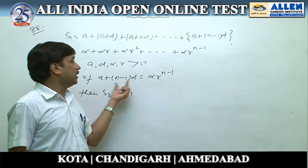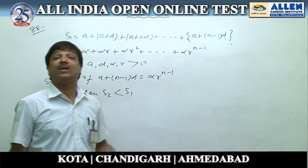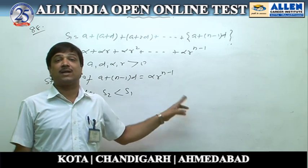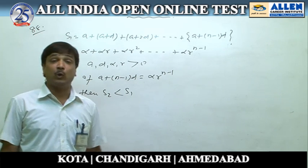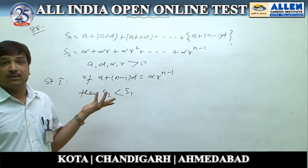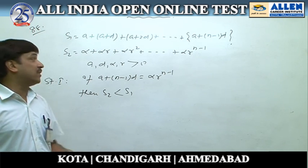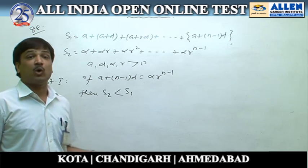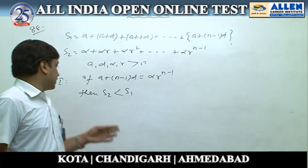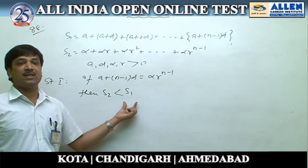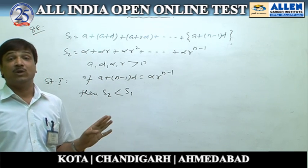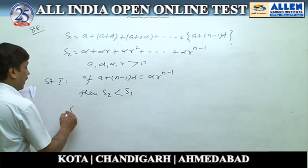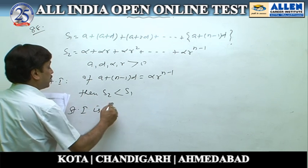This is the sum of an AP and the sum of a GP, and all quantities are positive. But in statement 1, it is given that the nth term of the AP and the nth term of the GP are equal. We know that if the nth terms of an AP and a GP are the same, we cannot conclude which sum is greater. So we cannot say S1 > S2 or S2 > S1, and therefore statement 1 is absolutely false.